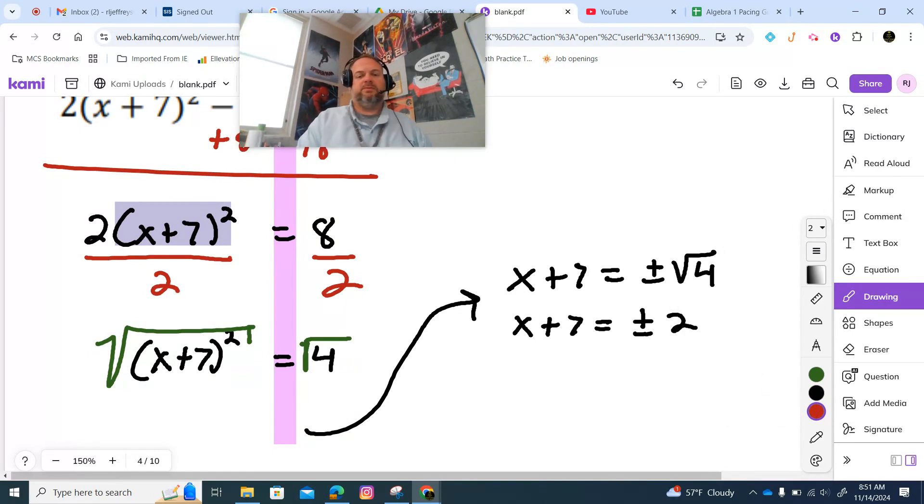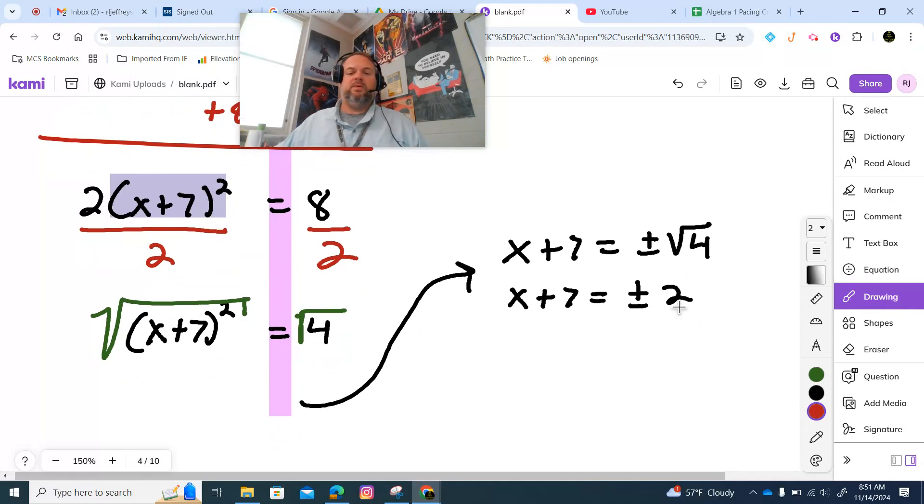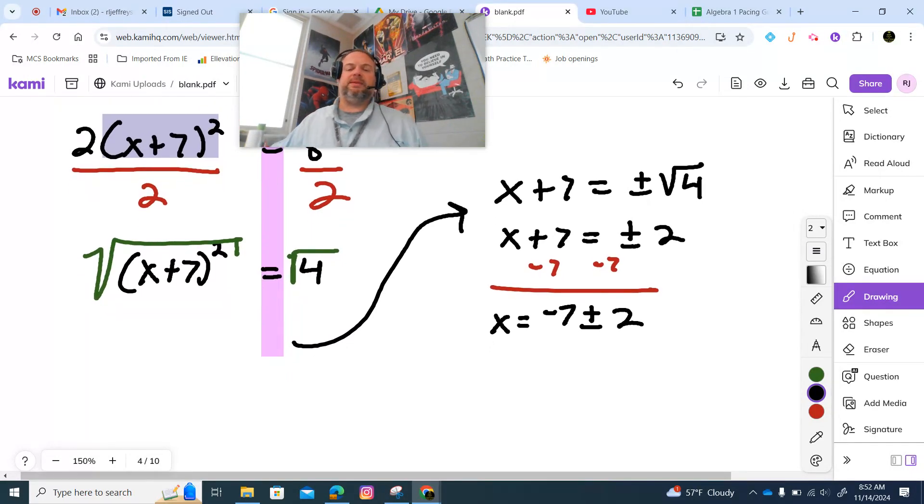Alright. Now, last thing, right now, we're going to subtract this 7. Since we actually had a whole number, like a perfect square root, we can actually do this one. We can say negative 7 plus 2 and negative 7 minus 2 and get our two answers.